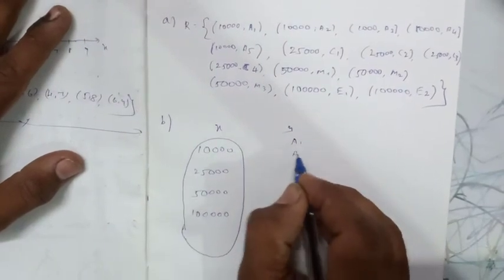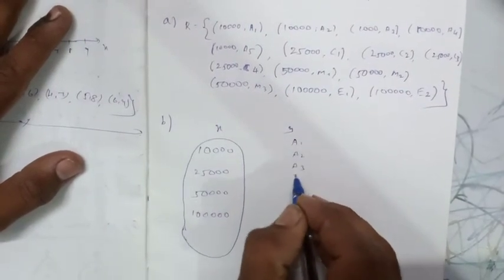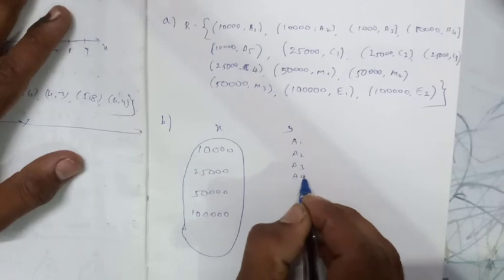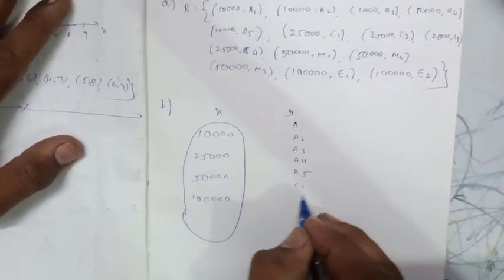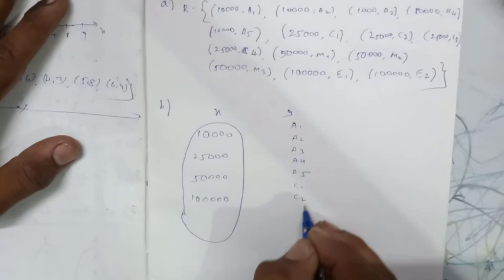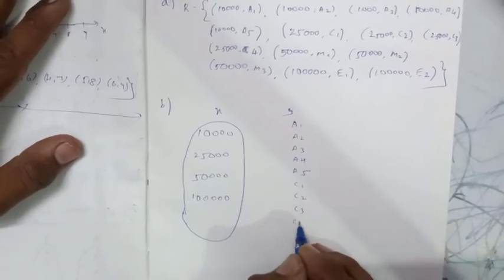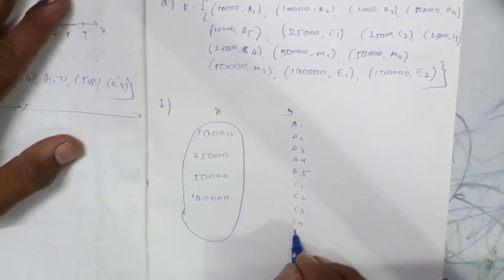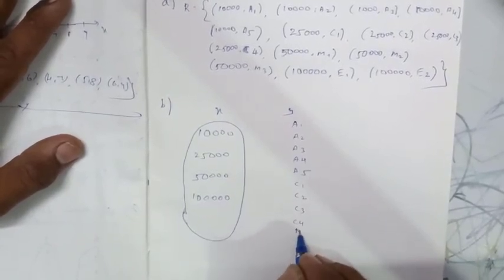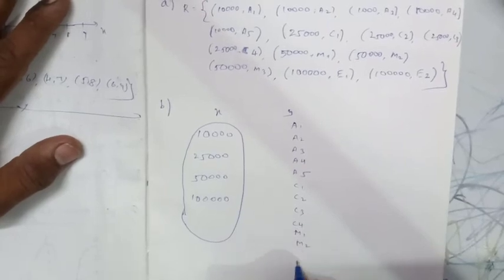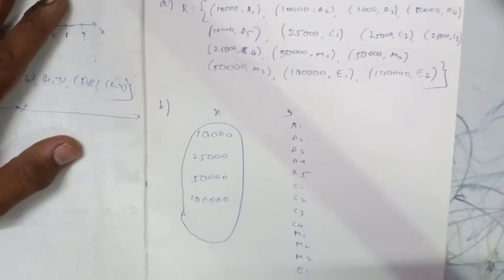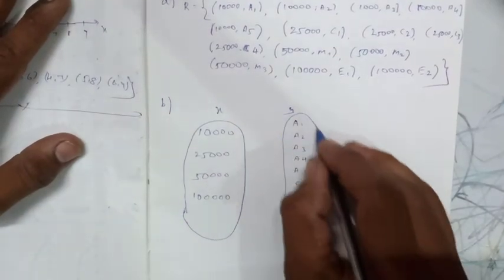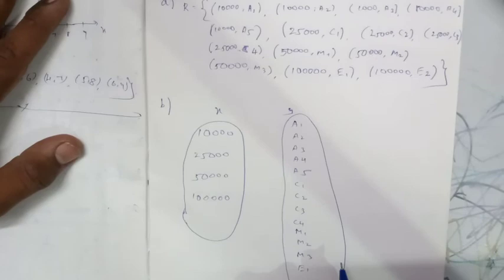On the Y side, listing all employees: A1, A2, A3, A4, A5 for assistants. Then C1, C2, C3, C4 for clerks. Then M1, M2, M3 for managers. Then E1, E2 for executive officers. So this is all the Y elements in the arrow diagram.